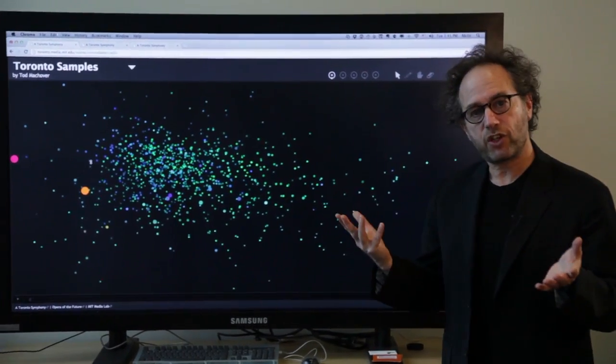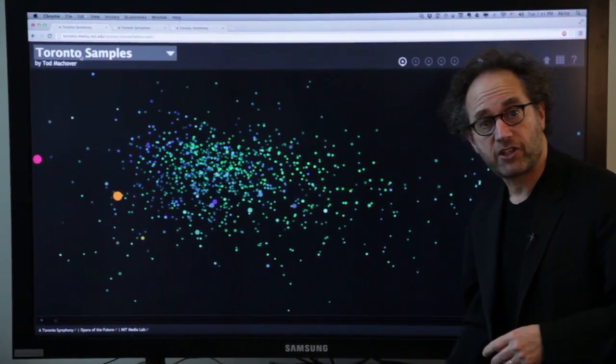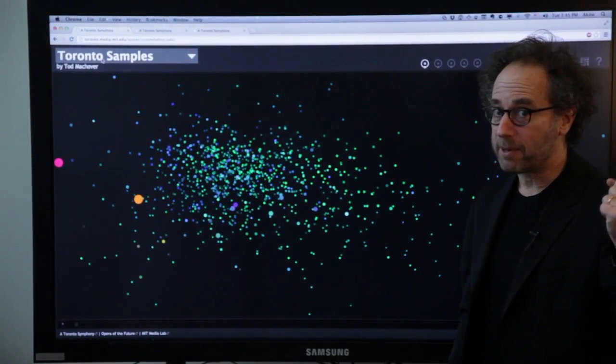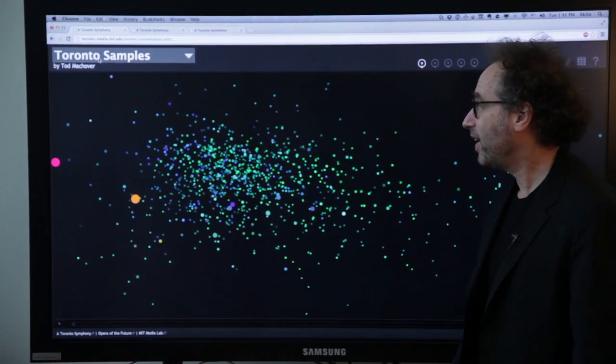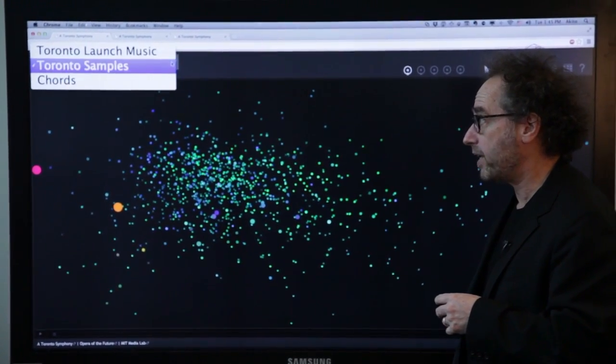So there are a bunch of different things you can do. I'll just show you a little bit right now. When you go into Constellation, again you can find it at toronto.media.mit.edu. There are three different kinds of sounds you can play with right now.